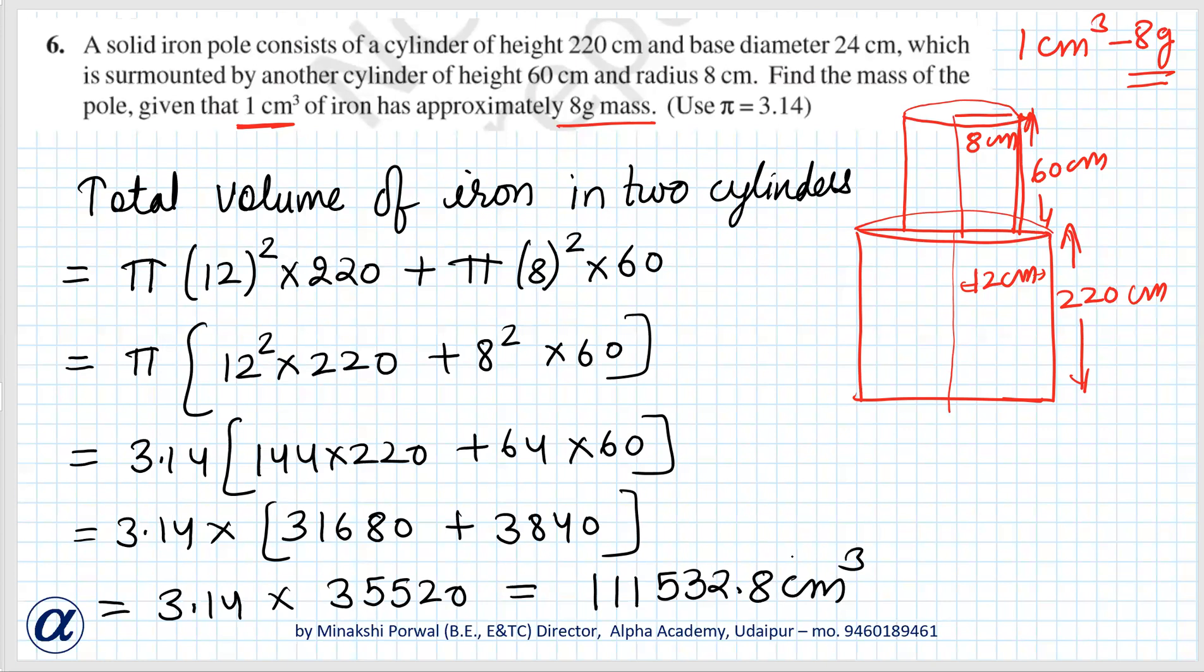We have to find mass and we are given that 1 centimeter cube has 8 grams. So this much centimeter cube will have how much mass, this we will find. So total mass of iron pole is equal to 111532.8 times 8.